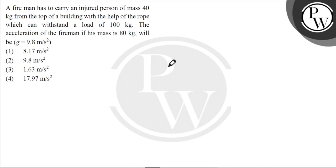Hello, let's read the question. A fireman has to carry an injured person of mass 40 kg from the top of a building with the help of a rope which can withstand a load of 100 kg.